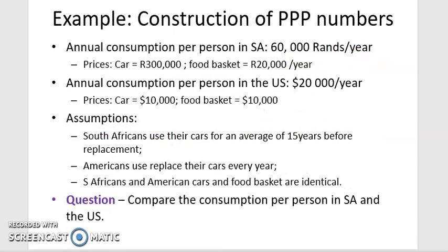Let's look at a practical example comparing South Africa and the USA. South African annual consumption per person is 60,000 rands, spent on two goods: a car costing 300,000 rand and a food basket costing 20,000 rand. In the USA, annual consumption per person is $20,000, with a car costing $10,000 and a food basket also costing $10,000.